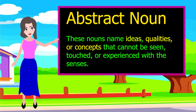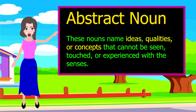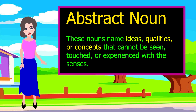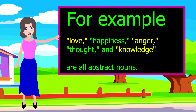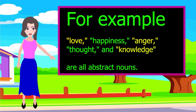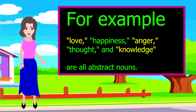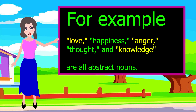Abstract nouns name ideas, qualities, or concepts that cannot be seen, touched, or experienced with the senses. For example, love, happiness, anger, thought, and knowledge are all abstract nouns.